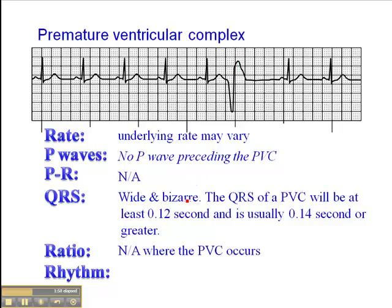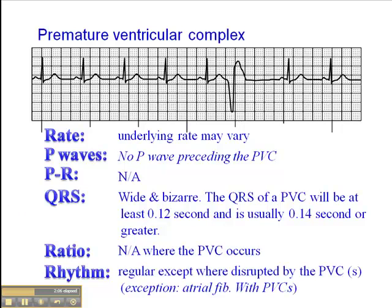The ratio of P waves to QRS is applicable in the underlying rhythm, but in the PVC it's not applicable. The rhythm is regular except where disrupted by the PVC or PVCs. The exception would be a patient who has an underlying rhythm of atrial fibrillation, which is normally irregularly irregular — if they have PVCs thrown in there, then it would be an underlying irregular rhythm.